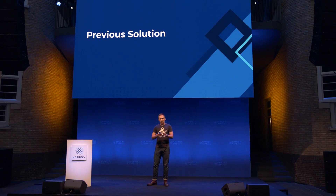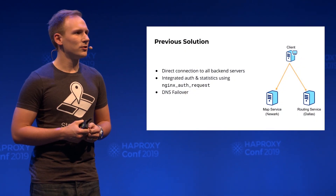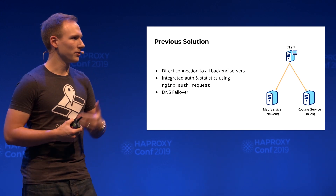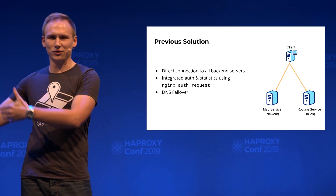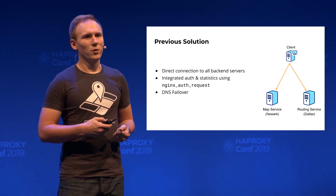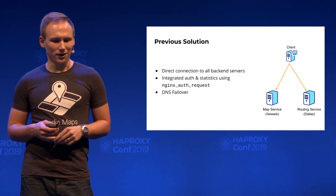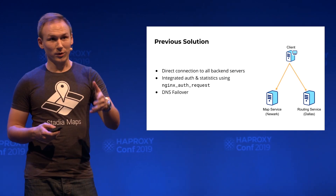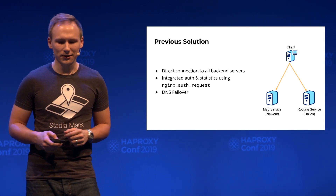Before I get into what a POP network is and how to use HAProxy for it, a little about our previous solution. It was based on direct connections to our backend servers spread around the globe. We used GeoDNS to resolve clients to the closest server hosting the service they needed — closest map server for maps, closest routing server for routes. All of our auth and statistics was baked into Nginx via Nginx auth request, and we had DNS failover so if one region went down, its DNS record would eventually be updated to point to the next region.